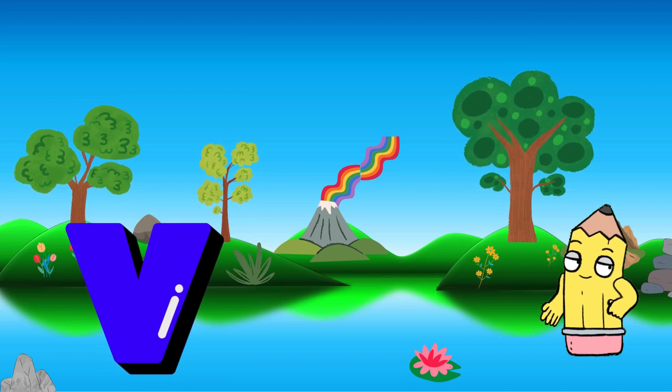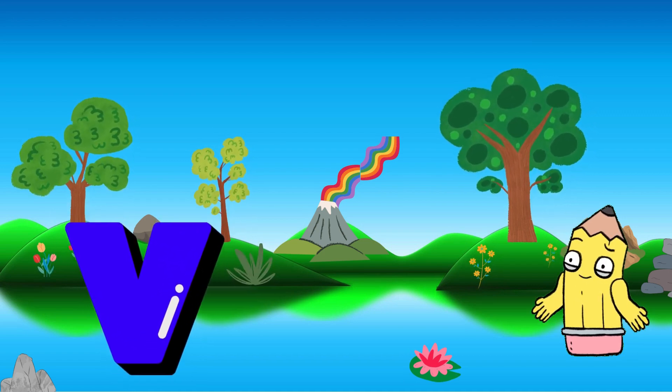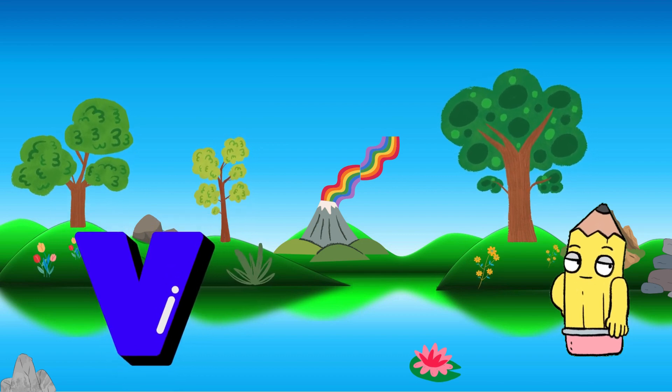Venture forward with the letter V. Repeat after me, V. Vibrant! V is for Volcano, spewing colors in our alphabet journey.